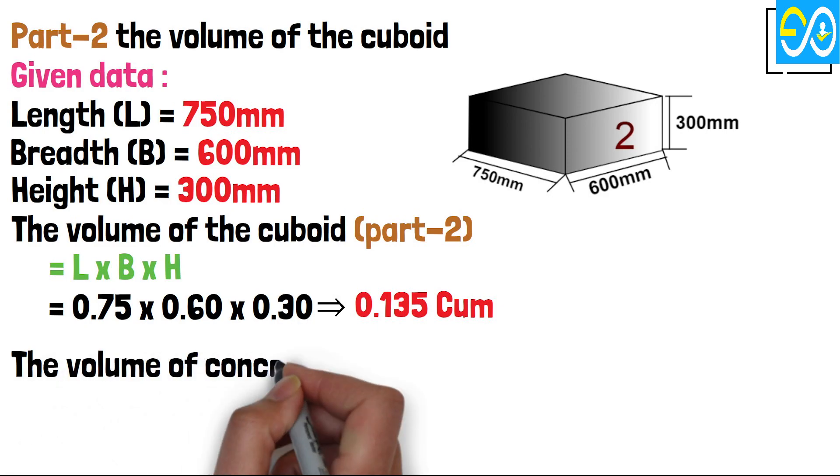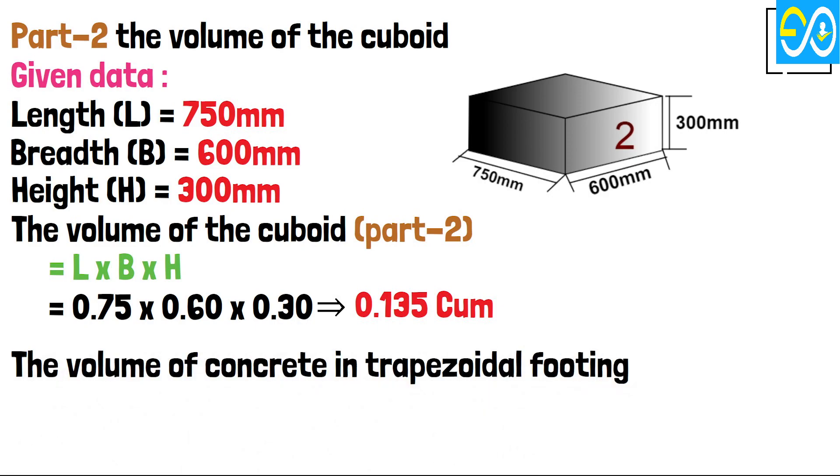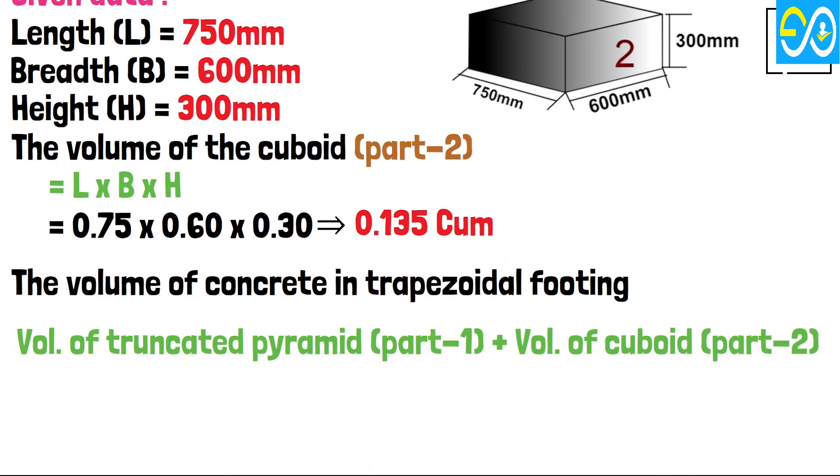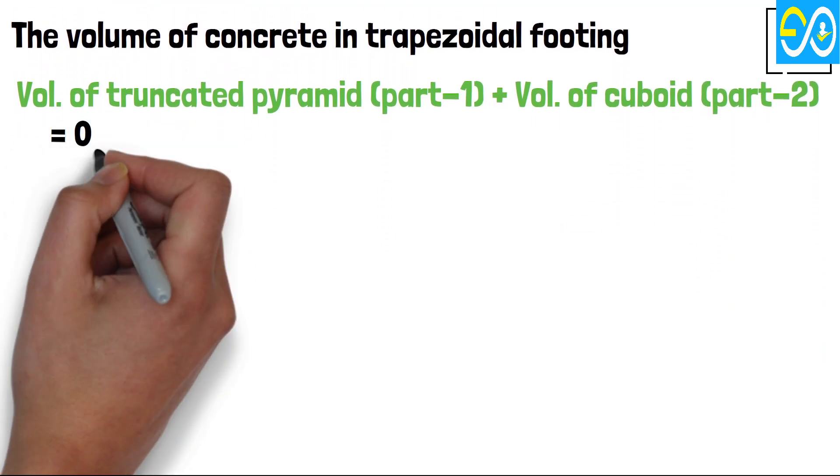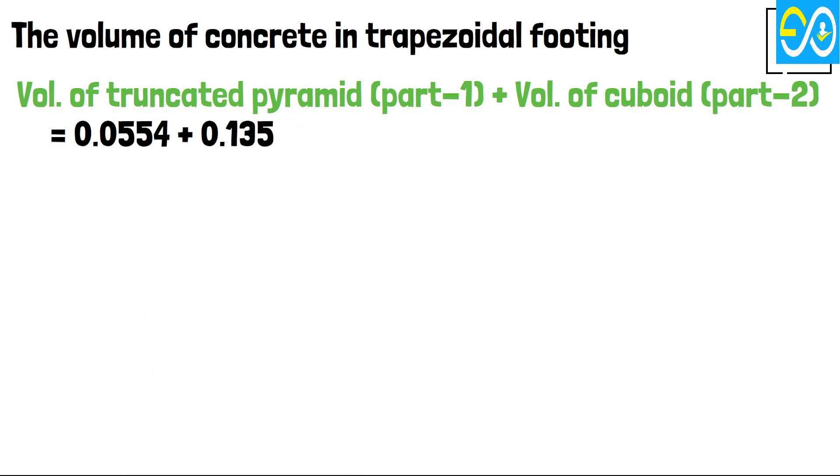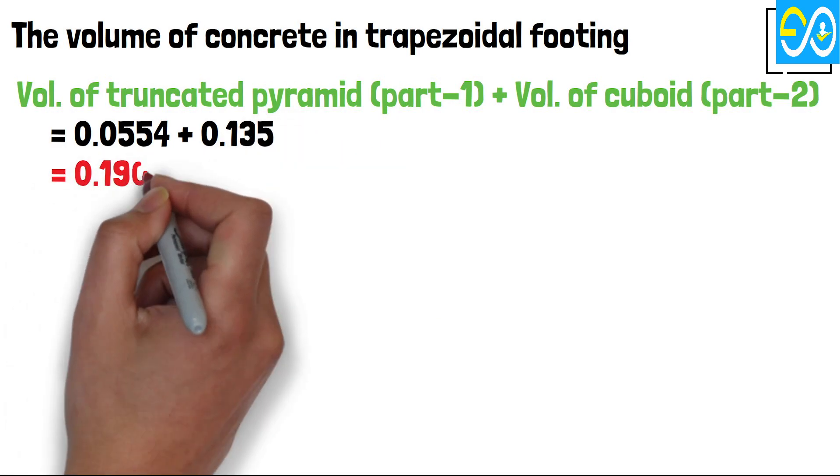The Volume of Concrete in Trapezoidal Footing equals Volume of Truncated Pyramid Part 1 plus Volume of Cuboid Part 2 equals 0.0554 plus 0.135 equals 0.1904 cubic meters.